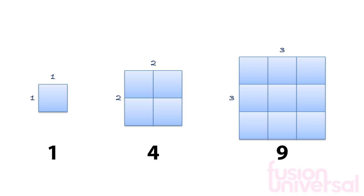We get these numbers as follows. The first picture has one row and one column. We can see that 1 times 1 is equal to 1.